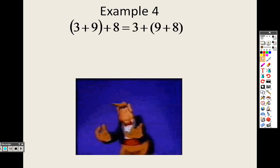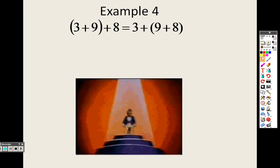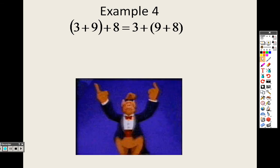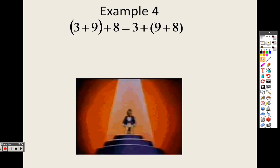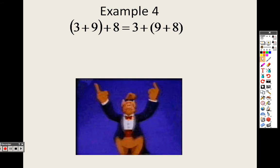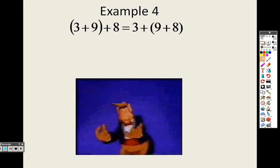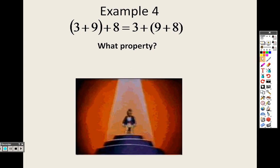So we take a look here at example 4. We have (3+9)+8 equals 3+(9+8), basically, but they're grouped differently in parentheses. So what I want you to do is tell me what property do you think that is?